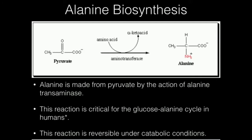This reaction, depending on the energy state of the liver, can occur in either direction. Alanine can be converted to pyruvate, or pyruvate can be converted to alanine. If the liver is in the biosynthetic direction, it generally runs toward alanine. Skeletal muscle, on the other hand, generally only runs from pyruvate to alanine, and that's part of the glucose-alanine cycle.